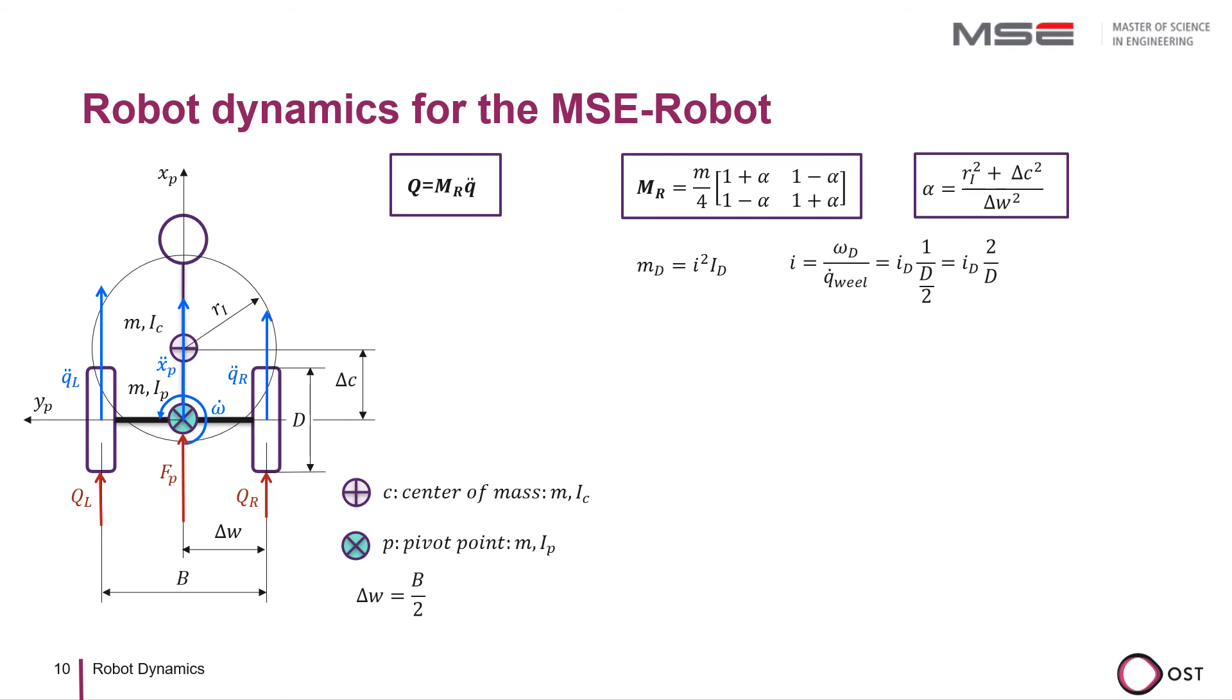Thus, md equals 2id divided by d squared times i from the motor gearbox. Since the motor inertia act on each wheel of the motor unit, the motor unit is a diagonal matrix.